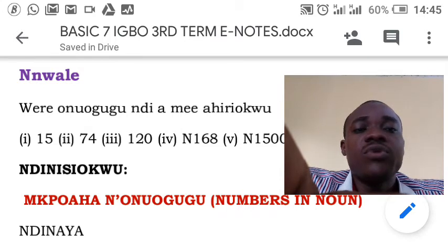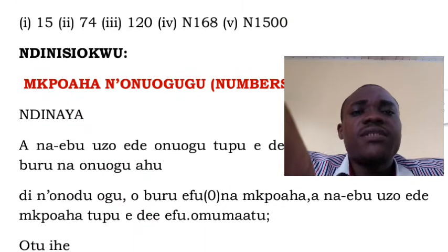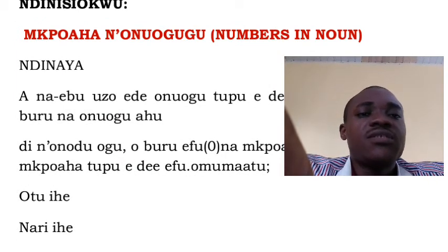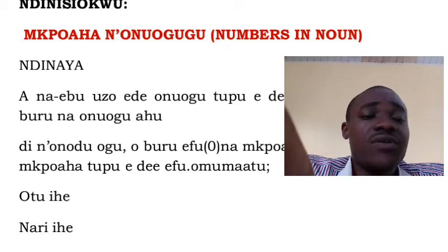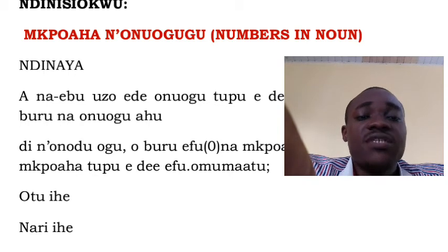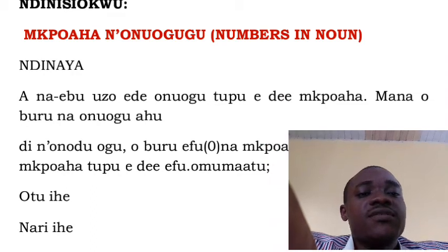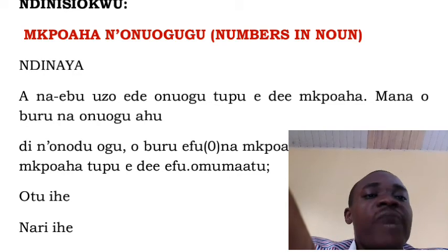Today we'll be looking at mwaha na onuagogo — that is, numbers and noun in Igbo. Mwaha means noun. What is a noun? A noun is a name of a person, place, or thing. So we are going to be learning mwaha na onuagogo, that is numbers and noun together.